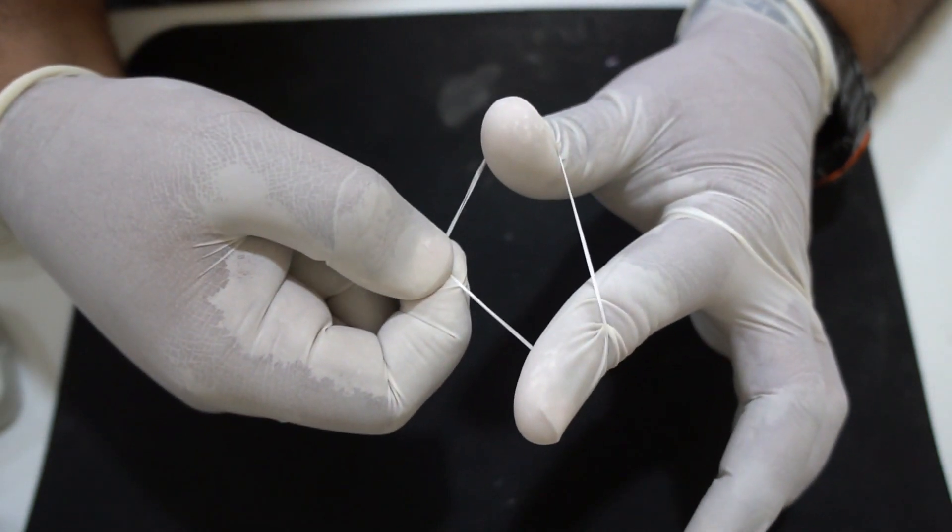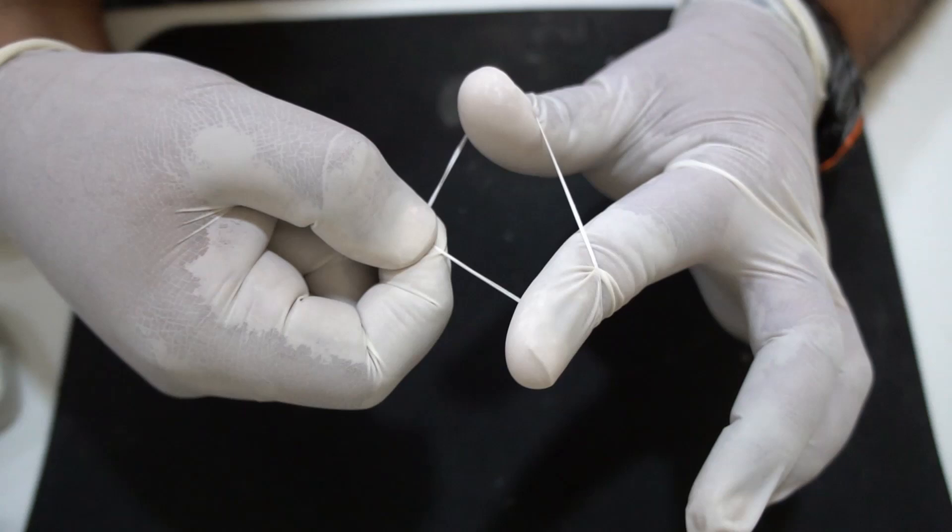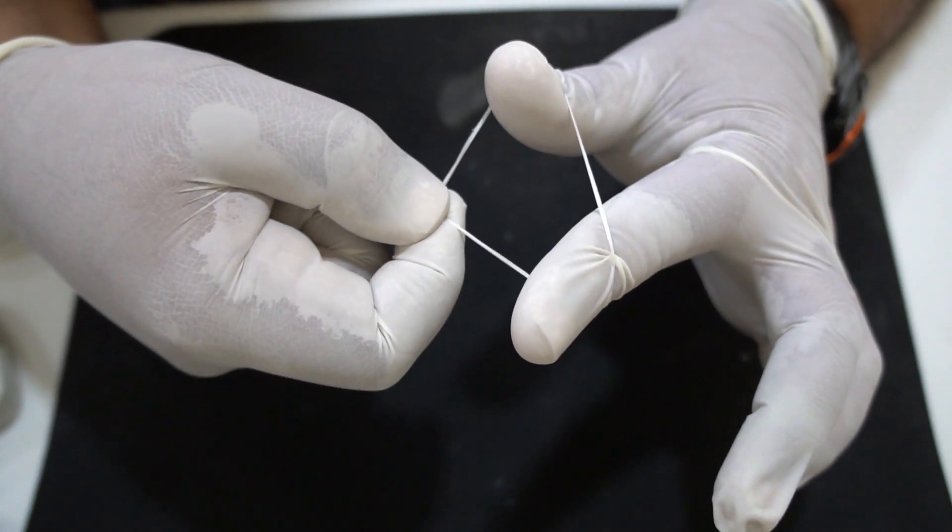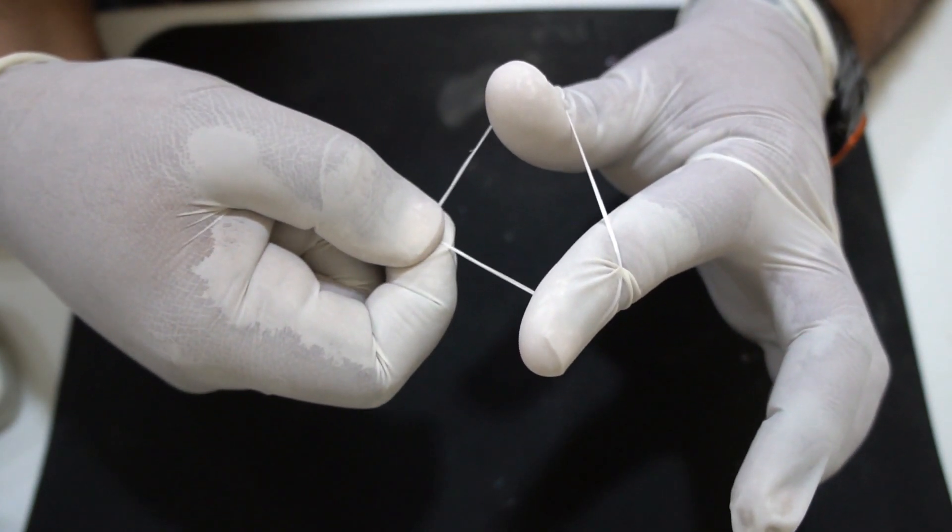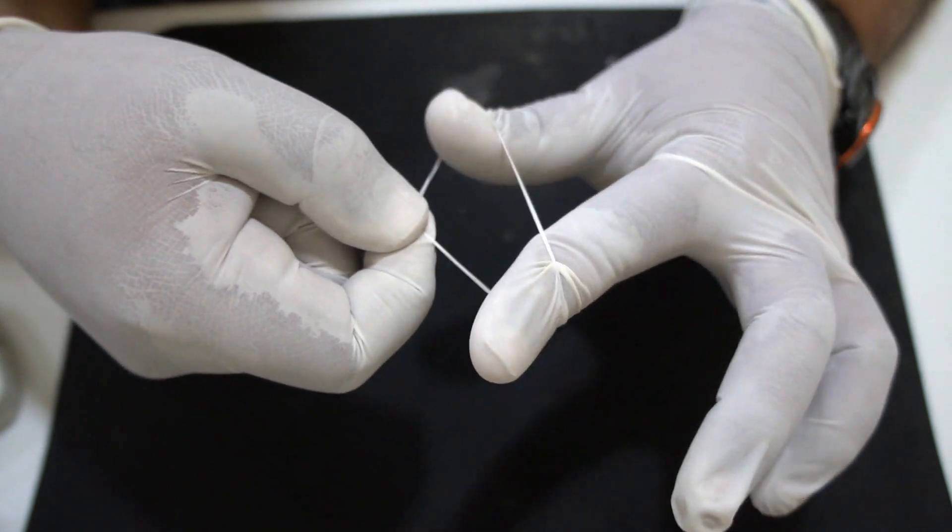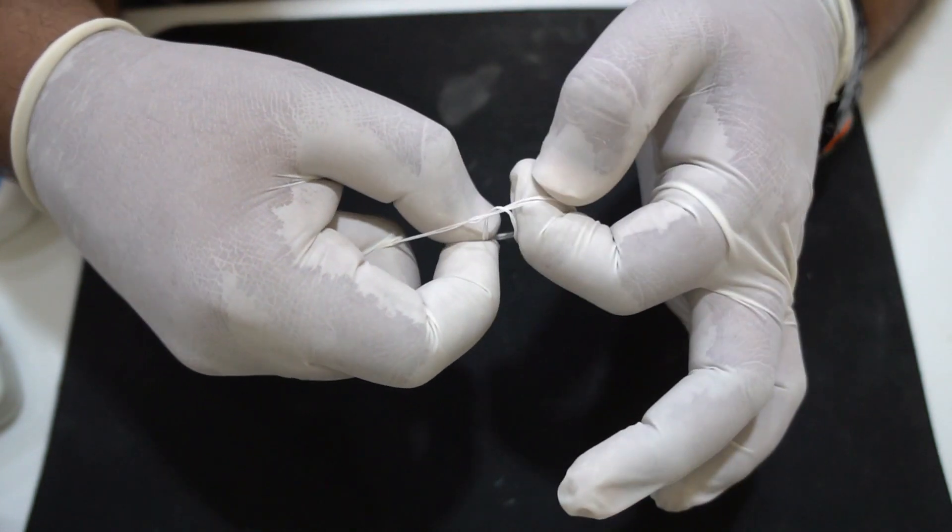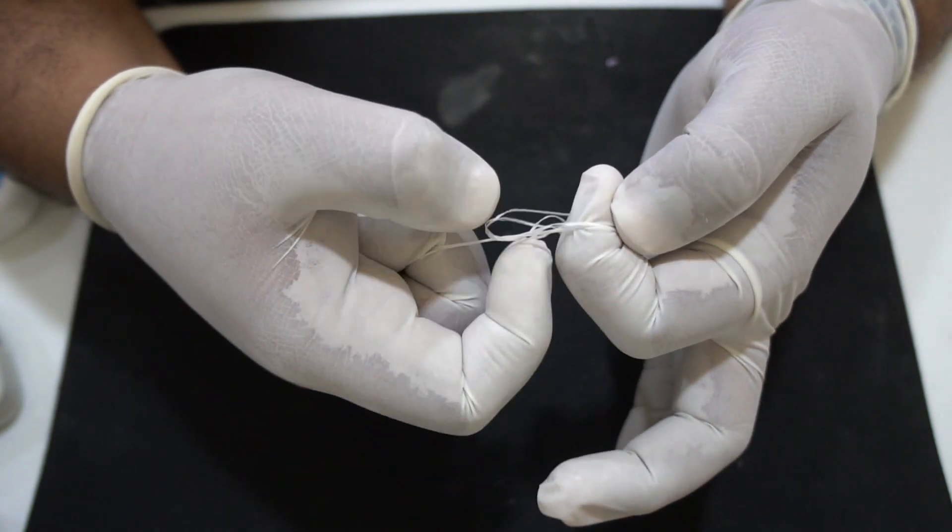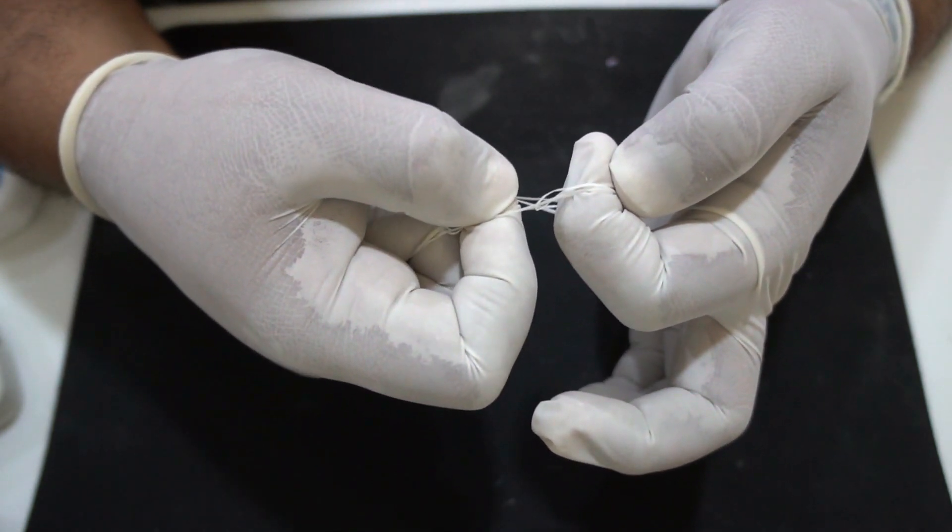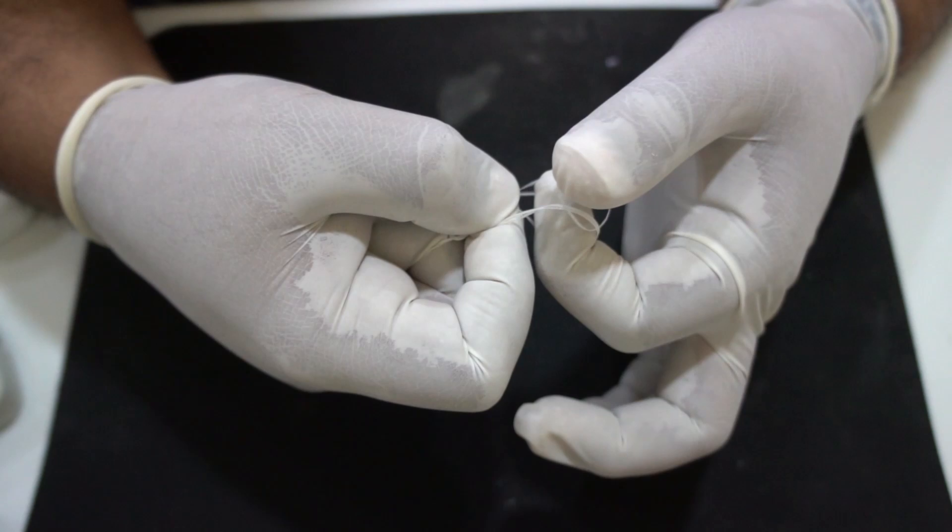Again stretch it between your index finger and your thumb. Move the floss again from the right side towards the left side. Again transfer it to the index finger.